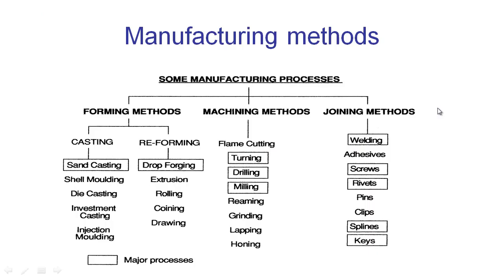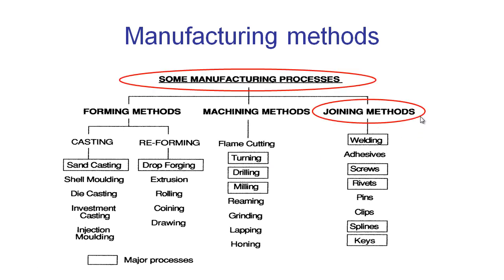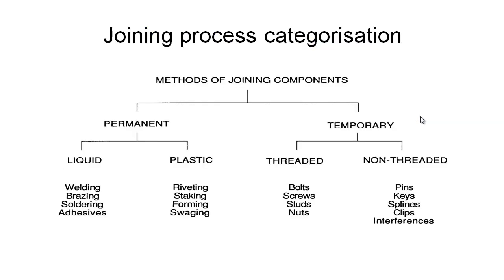Let's start by taking a look at the overall chart that captures most of the manufacturing methods in different categories. We have forming methods, the main one being sand casting; we have machining methods including turning, drilling, and milling; and in this series of videos we're going to take a look at the joining methods.